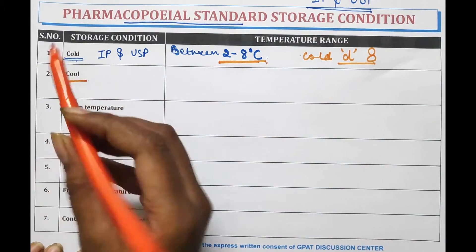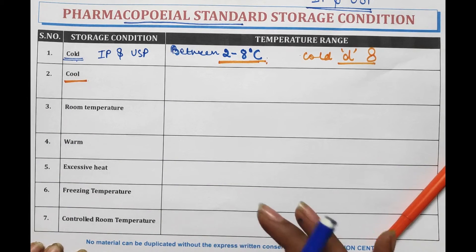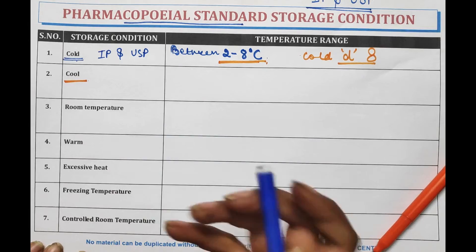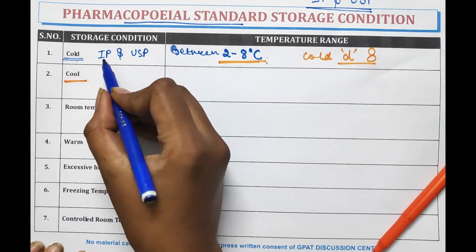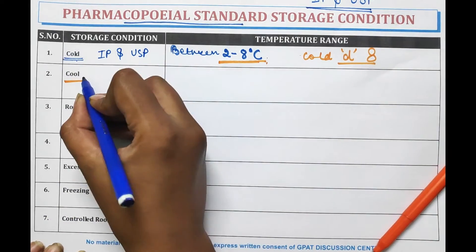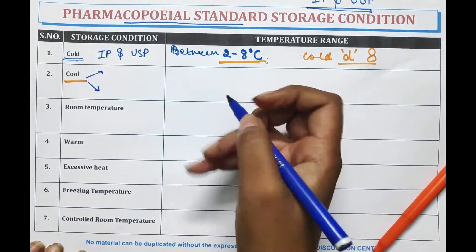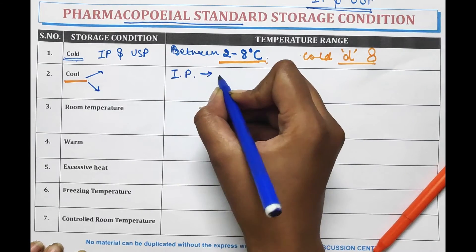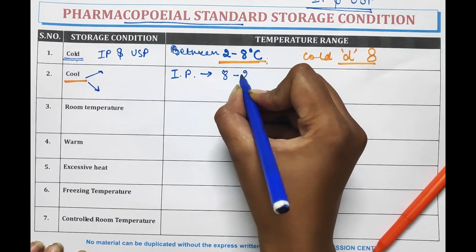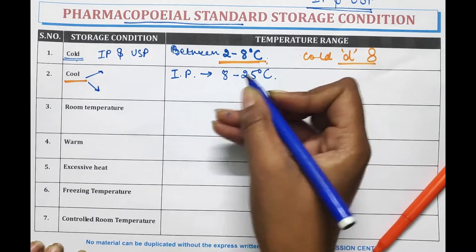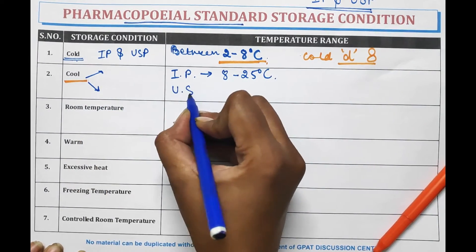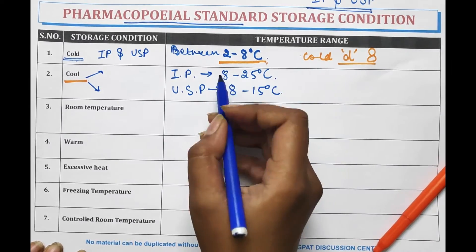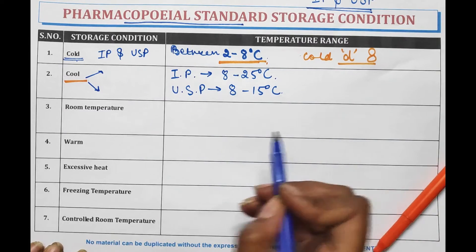Cool means a medicine or pharmaceutical product which must be stored at a particular temperature. According to Indian Pharmacopoeia and USP, cool has been defined into two ranges. According to Indian Pharmacopoeia, the temperature is 8 to 25 degrees Celsius, and according to USP, it is 8 to 15 degrees Celsius. Both limits are different according to different Pharmacopoeias.